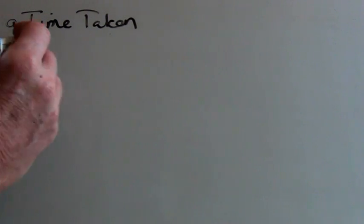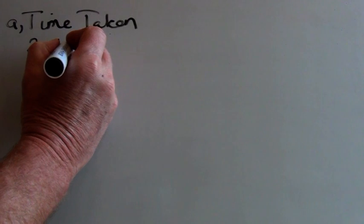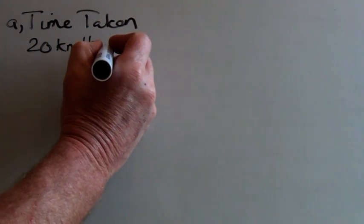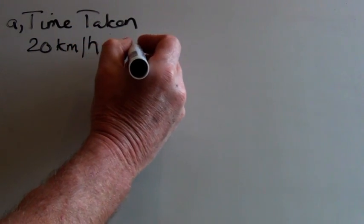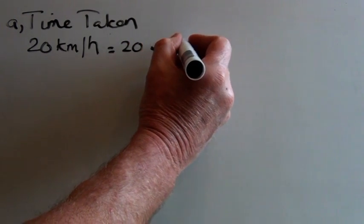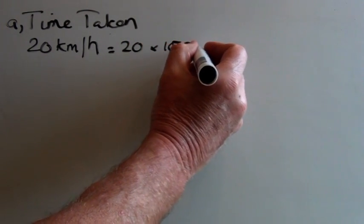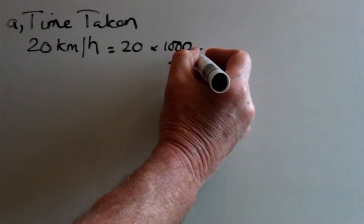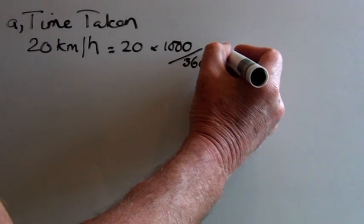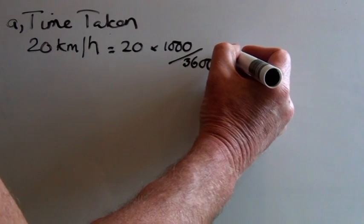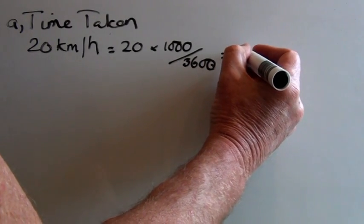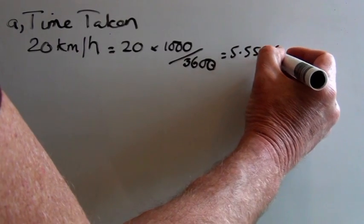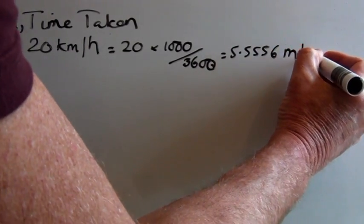For the time taken, the first thing we need to do is convert the kilometers per hour to meters per second. So 20 kilometers per hour equals 20 times 1000 divided by 3600, which equals 5.5556 meters per second.